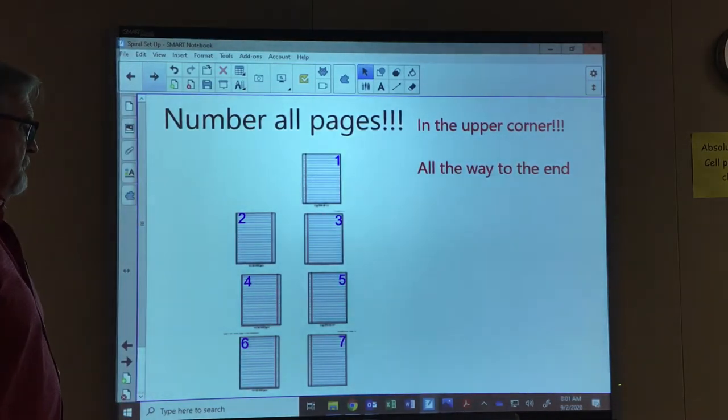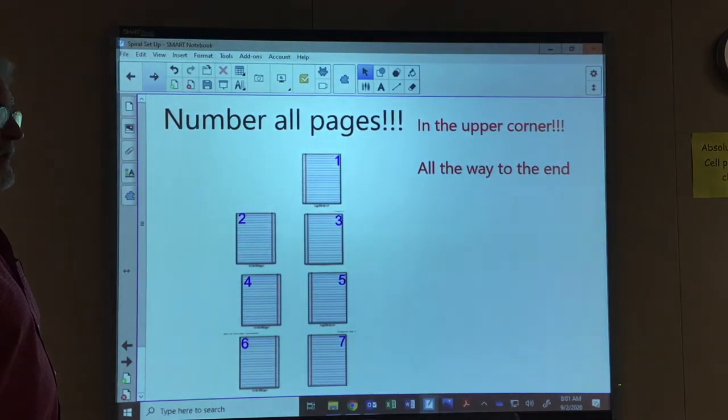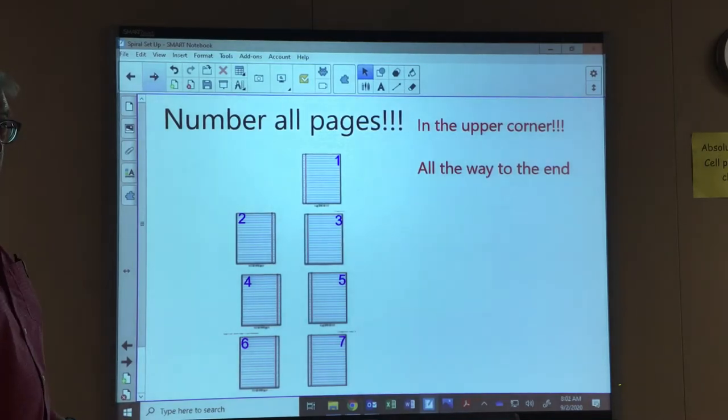So on, until you get all the way to the end of your spiral. If you have a 70-page spiral, go all the way to 70. If you have a larger spiral, just go the first 70 pages. Like I said, probably want to pause this now and get the numbering done.